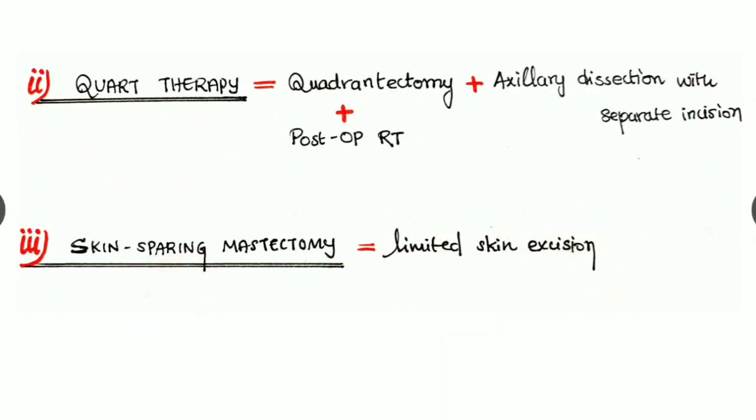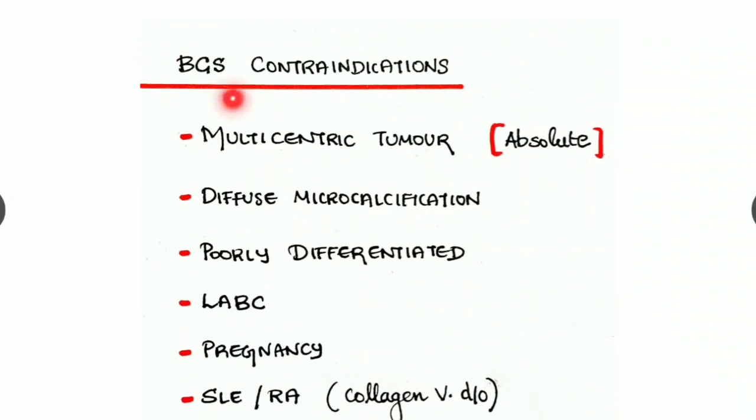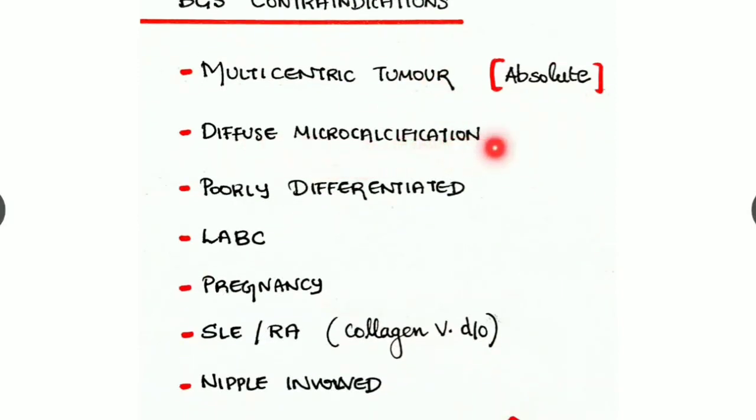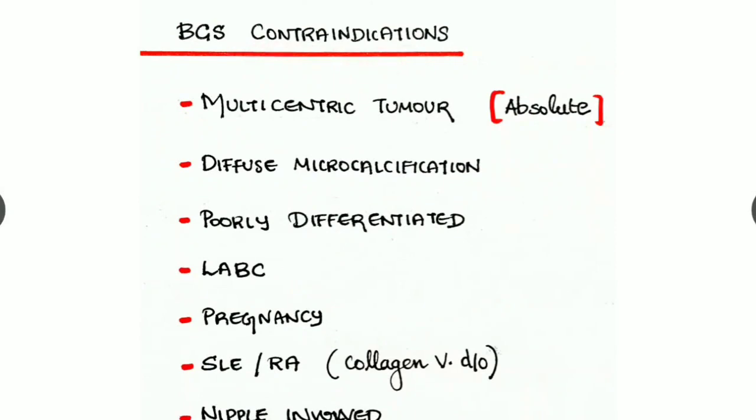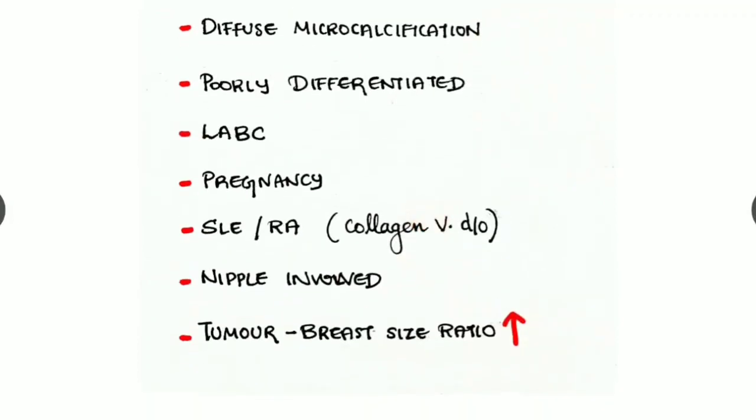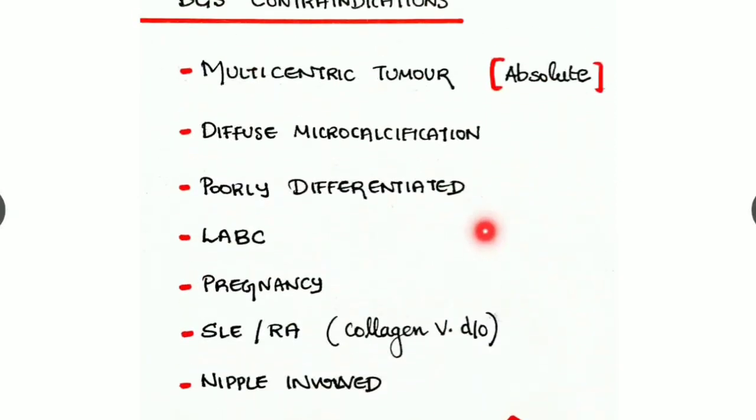We have to look at the contraindications of breast conservation surgery. The first absolute contraindication is the multicentric tumor. If there is diffused microcalcification, then the BCS is contraindicated. Others are poorly differentiated lesion, locally advanced breast cancer, and pregnancy and collagen vascular disorders like SLE and rheumatoid arthritis where radiotherapy is contraindicated. And if there is nipple involvement and if the tumor-breast size ratio is more, then breast conservation surgery is contraindicated.